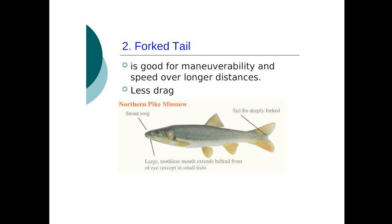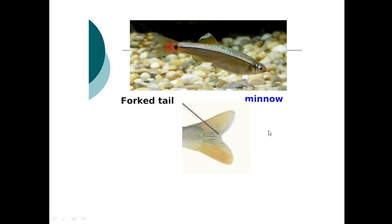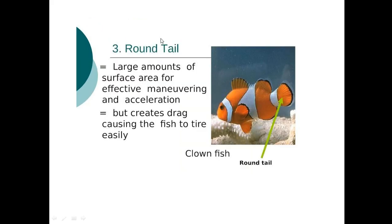The forked tail gives very good manoeuvrability and speed over longer distances, with less drag. Minnows (Minovas) have this type of forked tail — you can clearly see the forked shape in their tail.